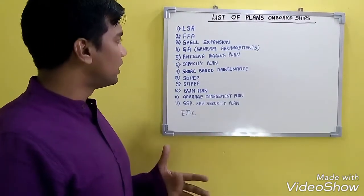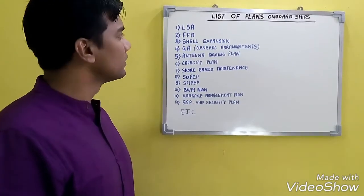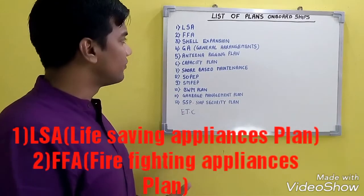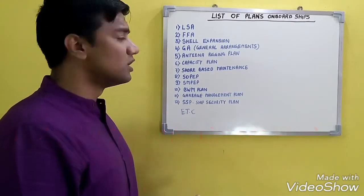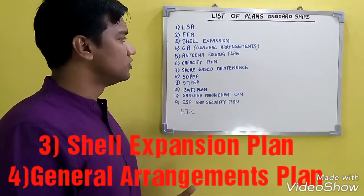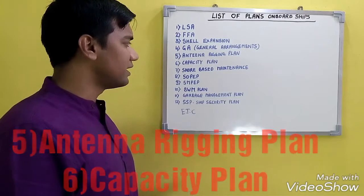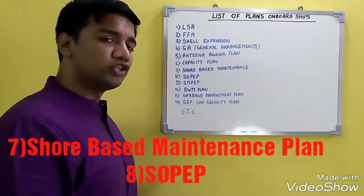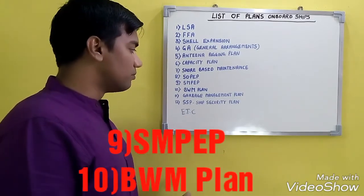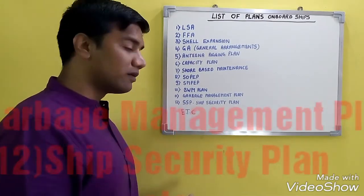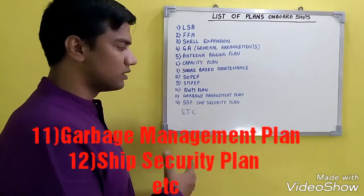Our next topic is the list of plans on board ship. There are various plans on board: LSA plan, FFA plan, life-saving appliances plan, firefighting appliance plan, shell expansion plan, general arrangements plan, antenna rigging plan, capacity plan, shore-based maintenance plan, ship oil pollution emergency plan, ship marine pollution emergency plan, ballast water management plan, garbage management plan, ship security plan, and various others.